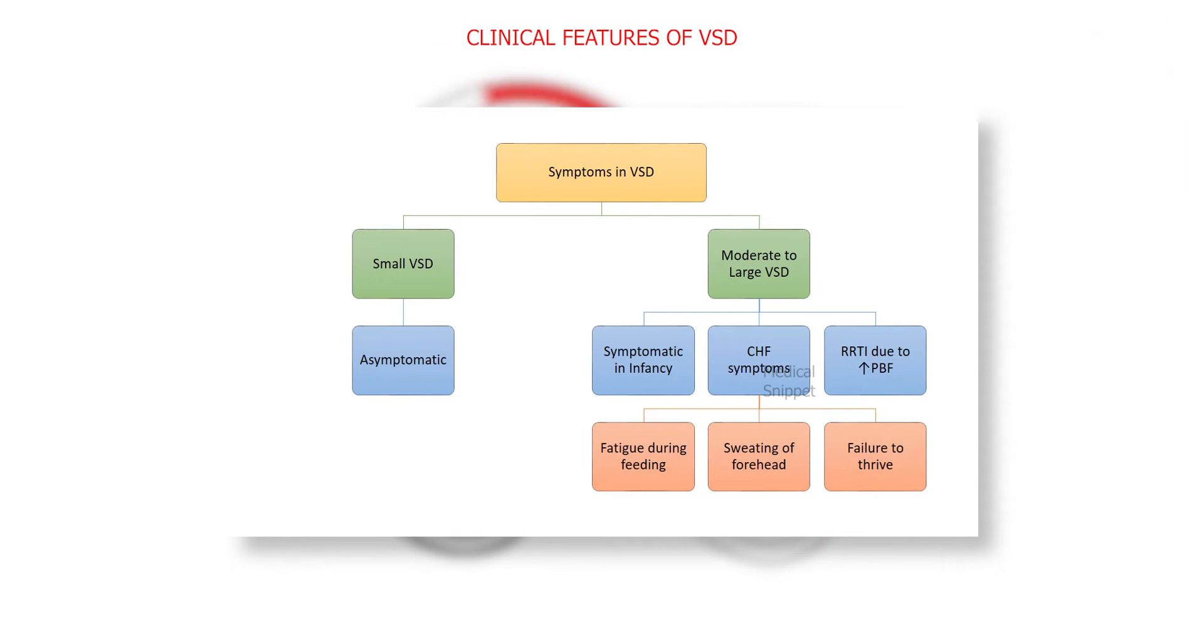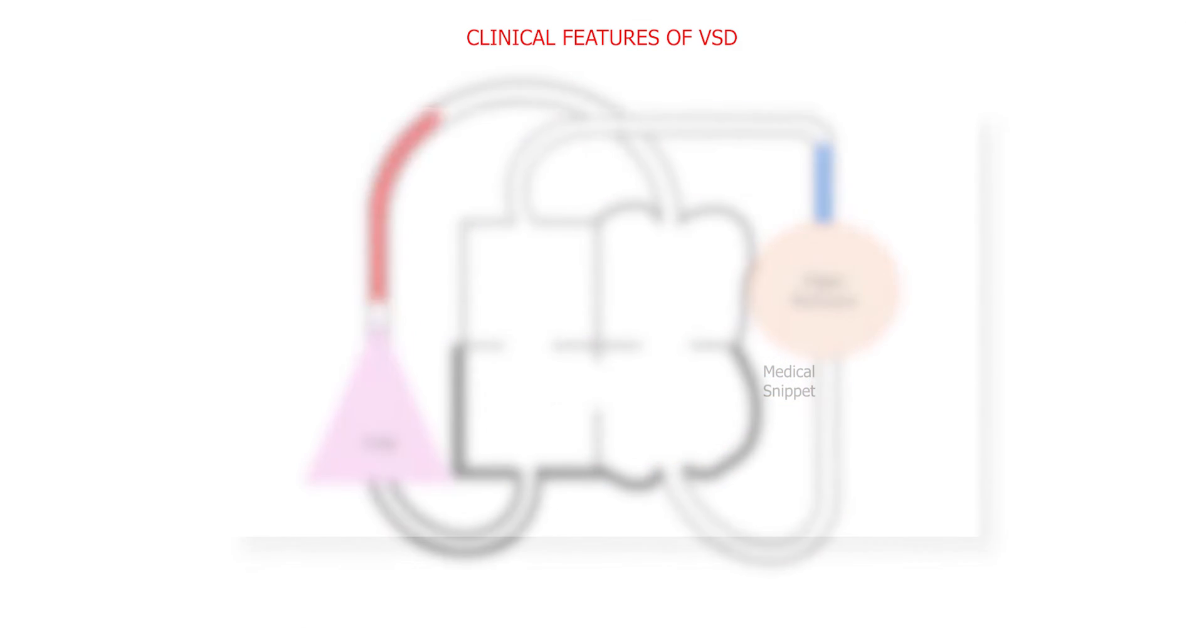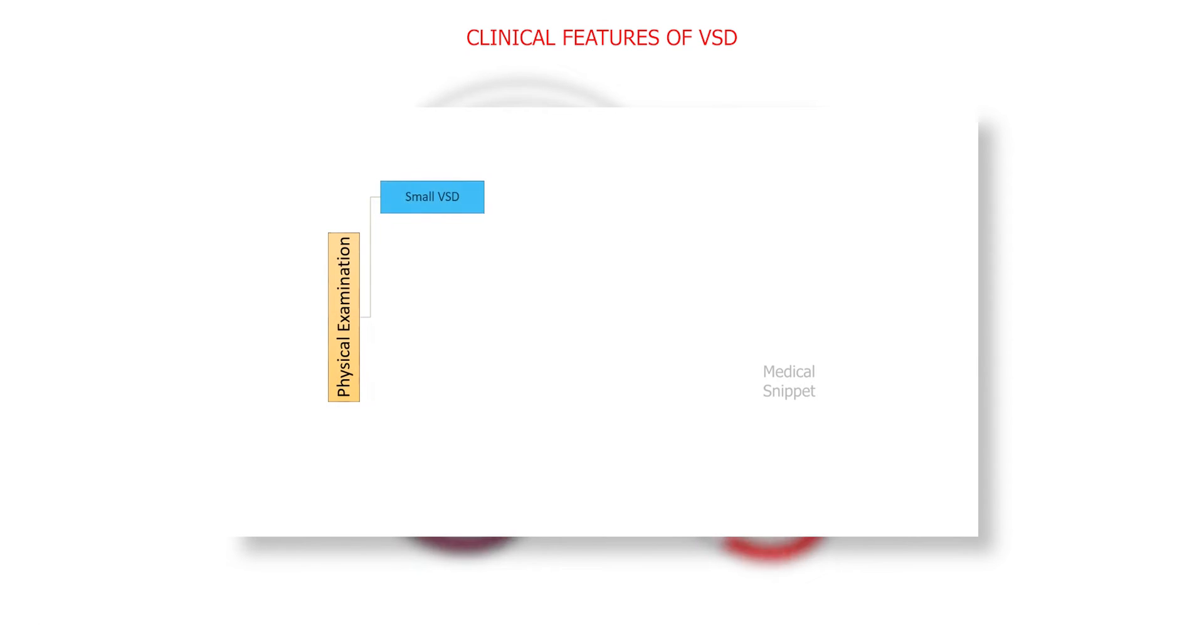On physical examination, small VSD has pansystolic or early systolic murmur at the lower left sternal border. Second heart sound splits normally and P2 is normal. There is also systolic thrill at the lower left sternal border.